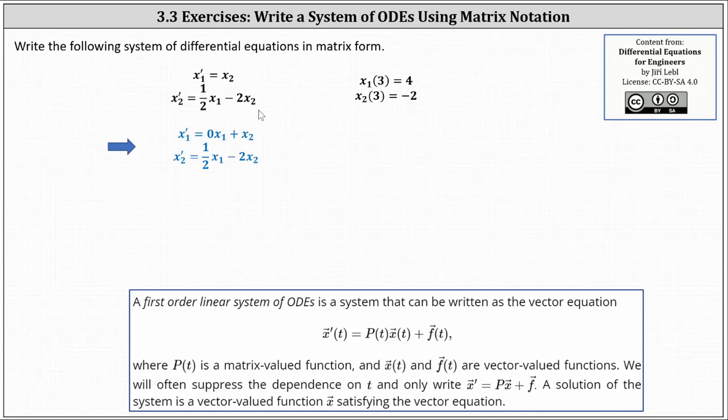Notice on the right side of the equation, there are no terms that are only functions of t, and therefore the vector-valued function f of t is equal to the zero vector, and therefore we do have a homogeneous system of differential equations.